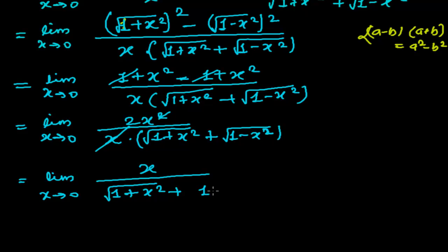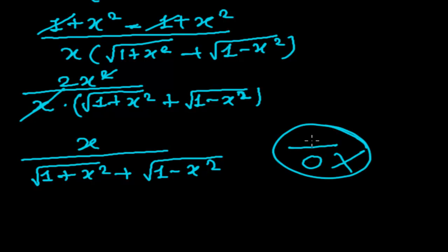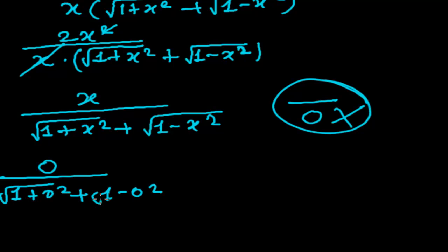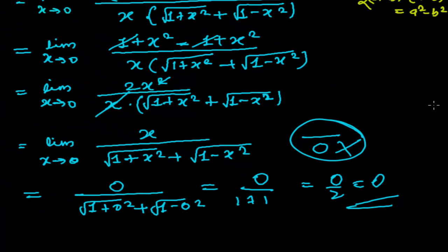We now have: limit as x tends to 0 of x divided by [√(1 + x²) + √(1 − x²)]. Now we can plug in x = 0 without getting an undefined value. The denominator becomes √1 + √1 = 2. So the limit equals 0 divided by 2, which is 0.